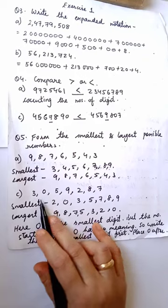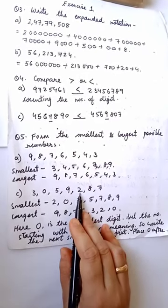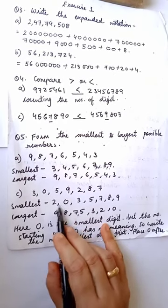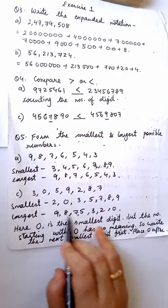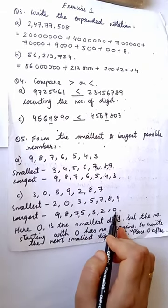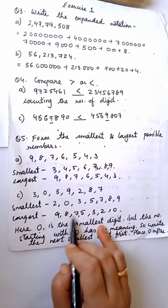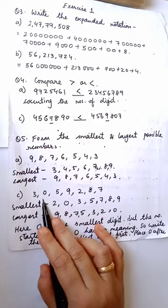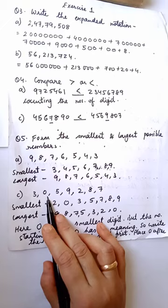So while dealing with 0s, first write the smallest non-zero digit — if it is 2, write 2 first, then 0: so 2, 0, 3, 5, 7, 8, 9. And the largest number will be the same as before: 9, 8, 7, 5, 3, 2, 0. Since 0 is the smallest and does not mean anything, it goes last in the largest number. So for any digits containing 0, first write the smallest non-zero digit and then place your 0.